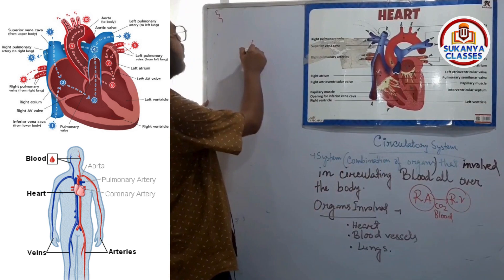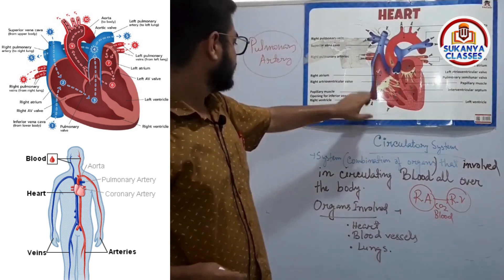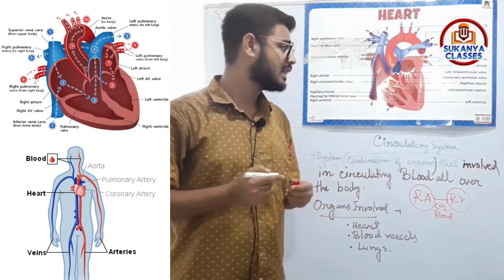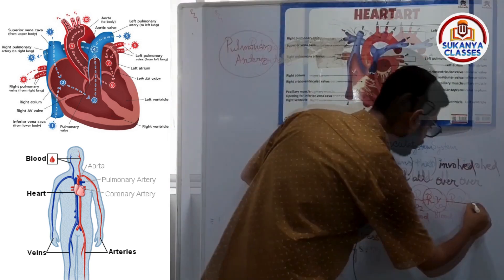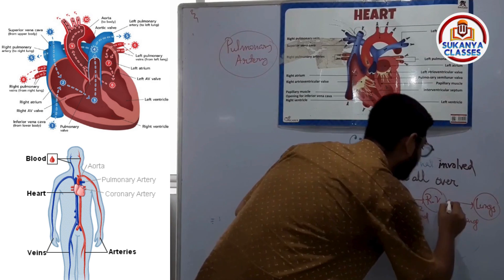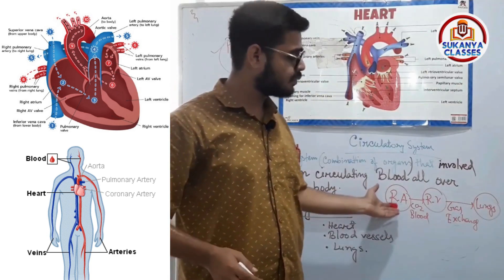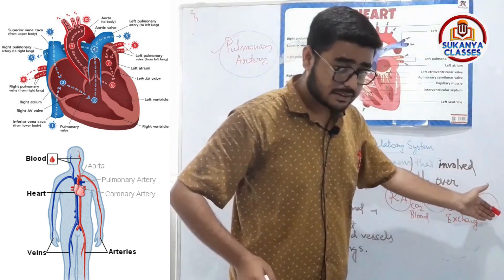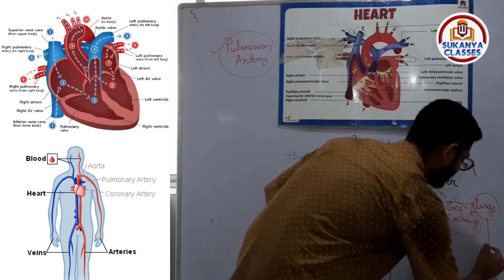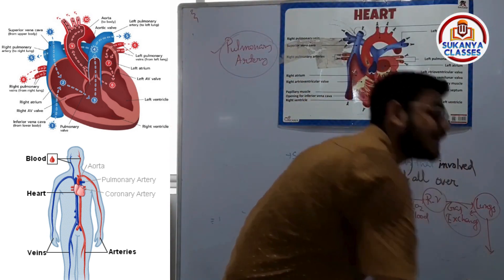This deoxygenated blood then leaves the right ventricle through a blood vessel called the pulmonary artery. The pulmonary artery carries this deoxygenated blood to the lungs, because the lungs are the site for gas exchange.